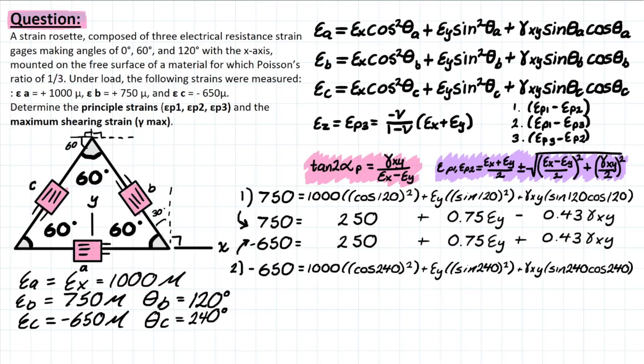Alrighty, so when you simplify these two equations, you're going to end up with something that looks like this for equation 1 and then something like this for equation 2. And the really convenient thing about this is when you plug in your values, you're going to notice that the coefficient for the shearing strain xy is equal for both equations but have opposite signs.